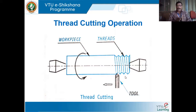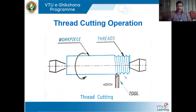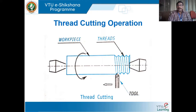Whenever one needs to make helical grooves or ridges on a cylindrical or conical surface, that operation is known as thread cutting. There are different types of threads: V thread, square thread, and trapezoidal thread — the geometry varies depending on the tool. The figure shown is a V thread, with an angle of 60 degrees between the flanks. There are also various thread standards like BSW and Whitworth threads.